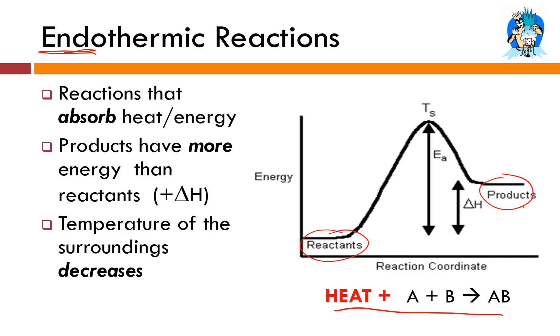And again, the amount of kilojoules is not too important at this point in time. Just know that endothermic reactions absorb heat. The products are going to have more energy than the reactants. Therefore, delta H will be positive. And we'll know that an endothermic reaction is occurring because you have the temperature of the surroundings decreasing.